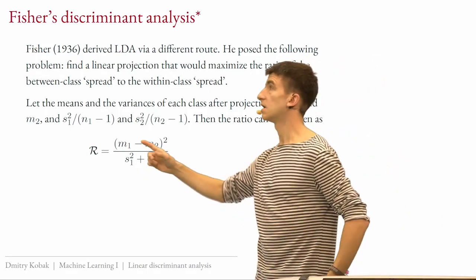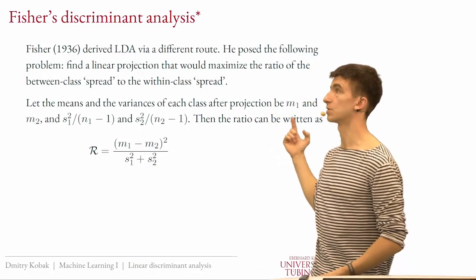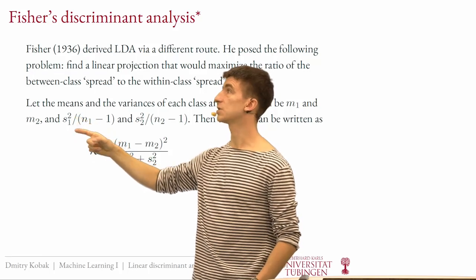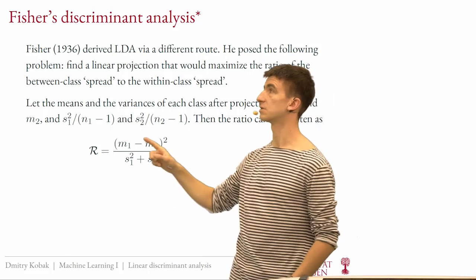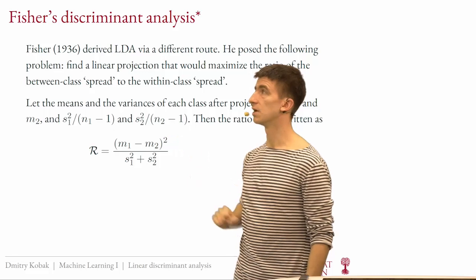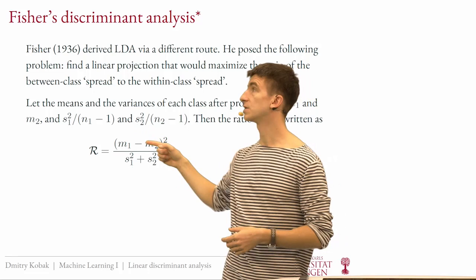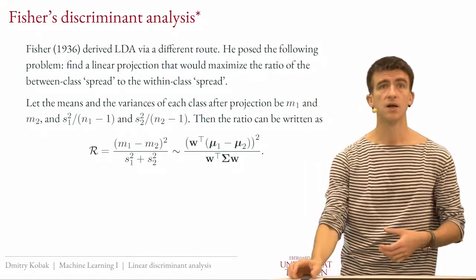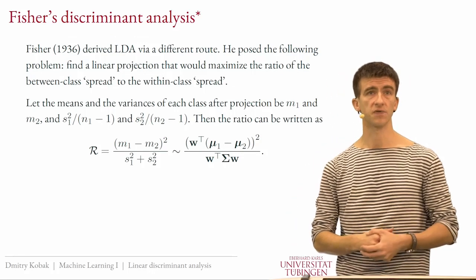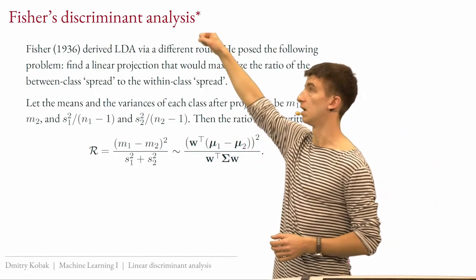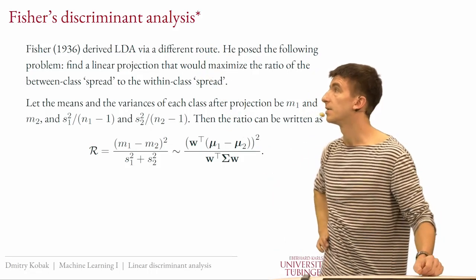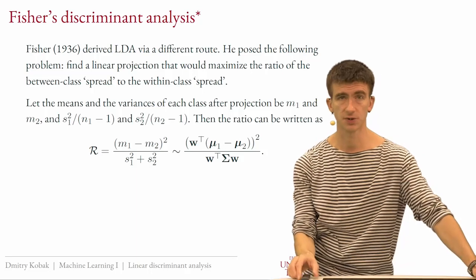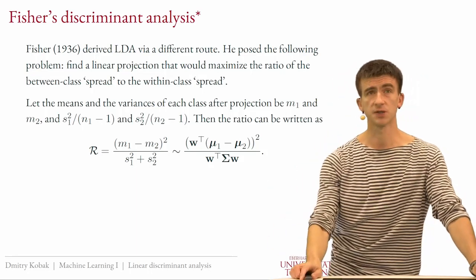Formally, let m_1 and m_2 be the projected means and s_1, s_2 be sums of squared deviations in each projected class. Fisher's ratio has the squared difference between means in the numerator and the sum of squared deviations from respective means in the denominator. With a bit of algebra and calculus, one can find the direction w that maximizes this ratio.